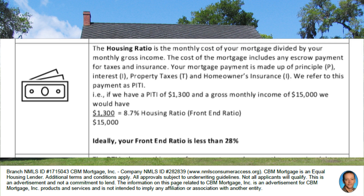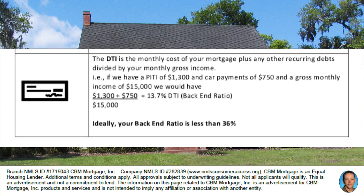For example, if we had a PITI of $1,300 and a gross monthly income of $15,000, we would have $1,300 divided by $15,000, which equals 8.7% — this is the housing ratio or front-end ratio. Ideally your front-end ratio is less than 28%, so you can see in this particular example we have a lot of margin.